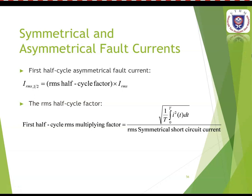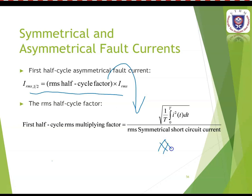For this analysis, we also need the first half-cycle asymmetrical fault current, calculated as: I-half-cycle = RMS half-cycle factor times IRMS. This half-cycle factor is obtained from the asymmetrical current factor table.